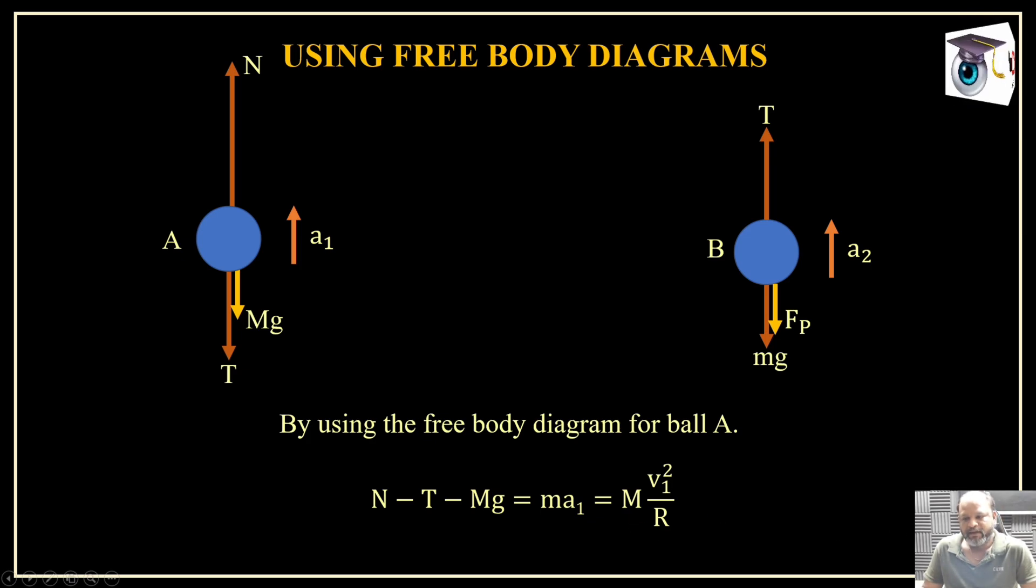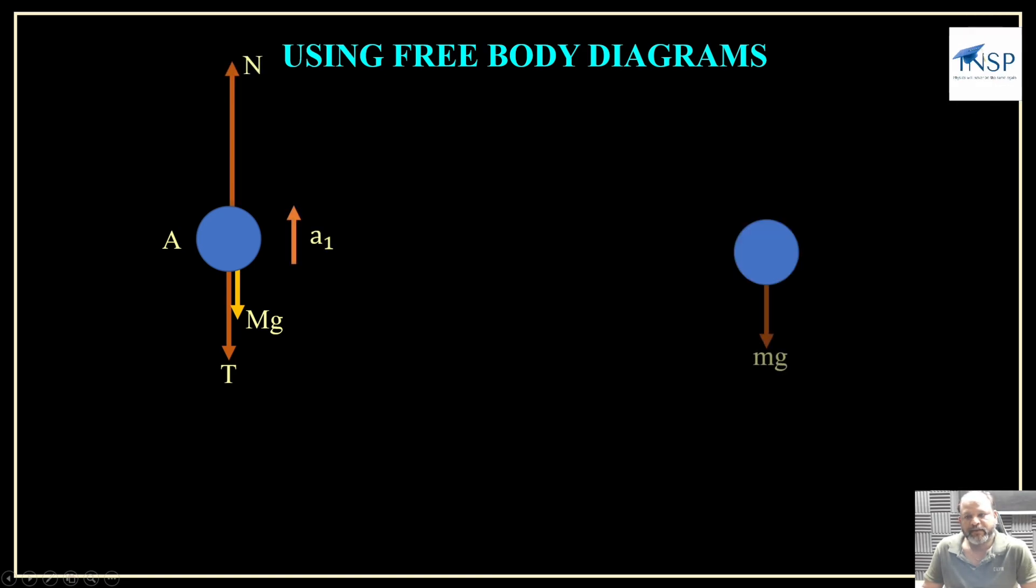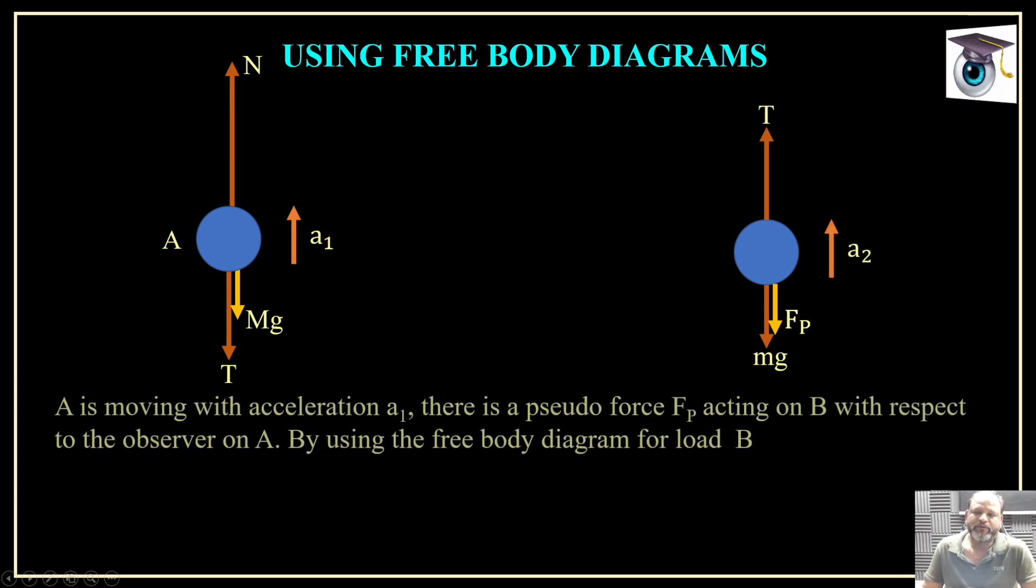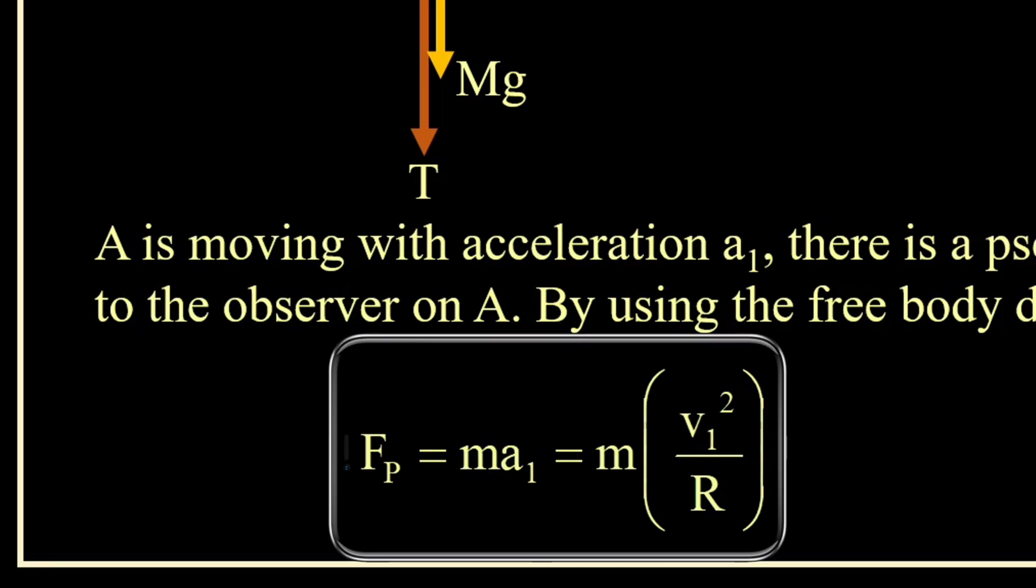Let's move further. The same free body diagram we are going to use here. You can check the pseudo force value is actually small m times a1 in the downward direction. A is moving with acceleration of a1, therefore a pseudo force Fp is acting on B with respect to the observer on A. So here I can write this value of pseudo force, which is m times a1, m v1 squared by R, which is known to us in this situation.